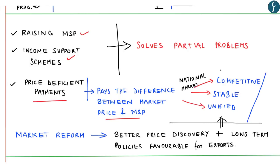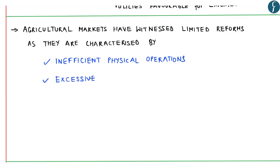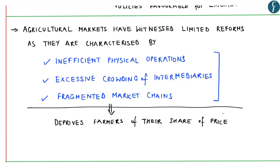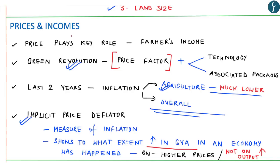To achieve better prices, there is a need for creation of a competitive, stable and unified national market for farmers. The author highlights that agricultural markets have witnessed only limited reforms, as they are characterized by inefficient physical operations, excessive crowding of intermediaries, and fragmented market chains — all of which deprive farmers of their share of price. Even states have not shown any urgency in reforming their markets. For farmers to attain better prices, agriculture has to go beyond farming with a value chain comprising farming, wholesaling, warehousing, logistics, processing and retailing.